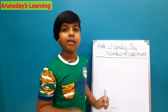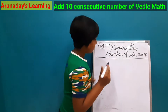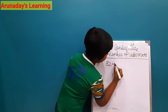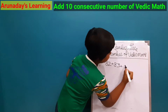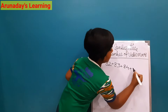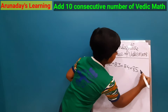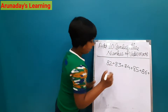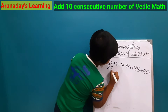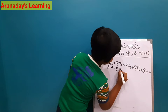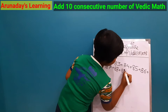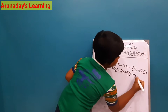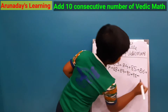Let's start with the examples so you can have a better understanding. Here is an example: 82 plus 83 plus 84 plus 85 plus 86 plus 87 plus 88 plus 89 plus 90 plus 91. So here 10 numbers are done and we have to give the answer.